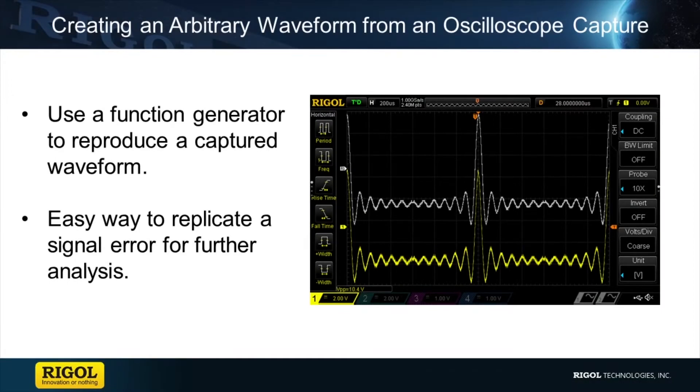When combined with one of our waveform generators, our oscilloscopes can easily capture a waveform and then with the waveform generator recreate the signal. This allows for testing a potentially problematic signal in the lab instead of in the field, helping test and debug the signal.